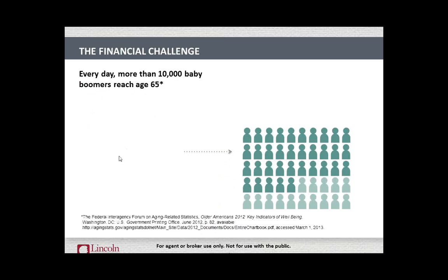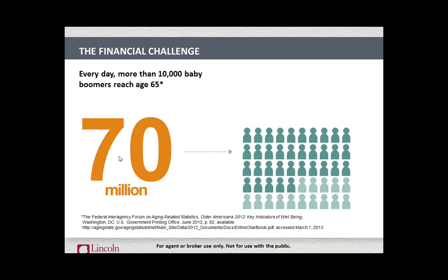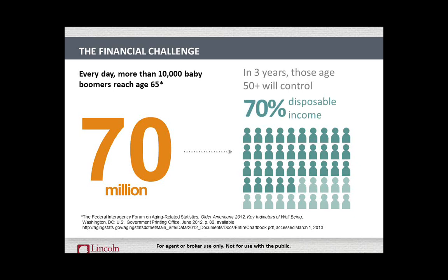As far as the long-term care environment, there are a lot of statistics and unprecedented numbers being reached every year. Every day more than 10,000 baby boomers are turning age 65, so the elder population is growing vastly, increasing the risk for long-term care. In the next three years, over 70% of disposable income is going to be in the hands of individuals 50 or older. With MoneyGuard, this is a repositioning strategy, so targeting disposable income is very important.